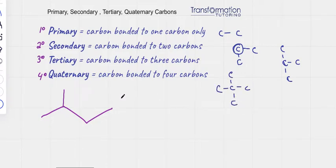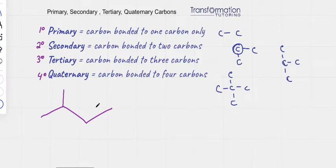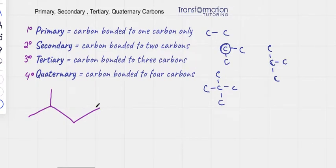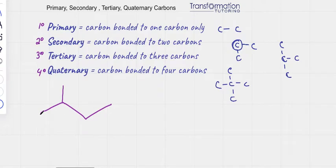Now let's go ahead and take a look at this molecule and identify each carbon as primary, secondary, tertiary, or quaternary. Let's look at this carbon — how many carbons is it directly attached to? It's attached to one carbon only, so this is going to be primary.